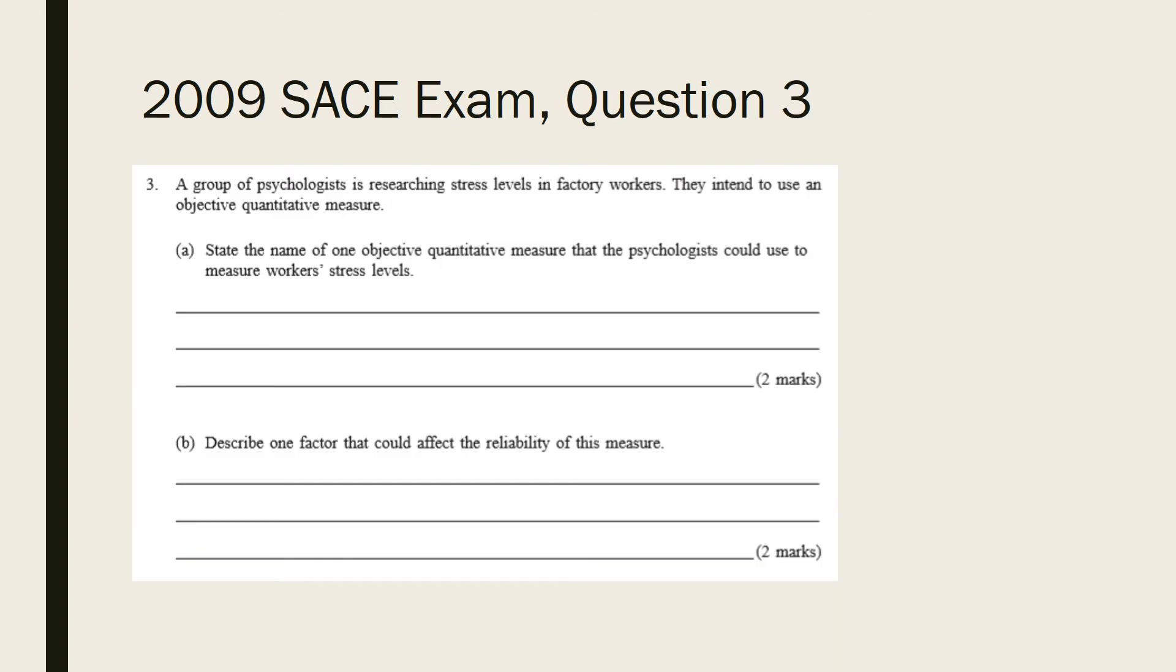Pause the video to take a minute to read through this question and attempt both parts a and b. Although in part a you've been given three lines, the question starts with the word state which means that no explanation or definition is required. Therefore all you need to do is write one objective quantitative measure that could be used to measure stress levels. One example of a measure that could be used would be heart rate. However you could list others such as measuring cortisol levels, breathing rate or perspiration.